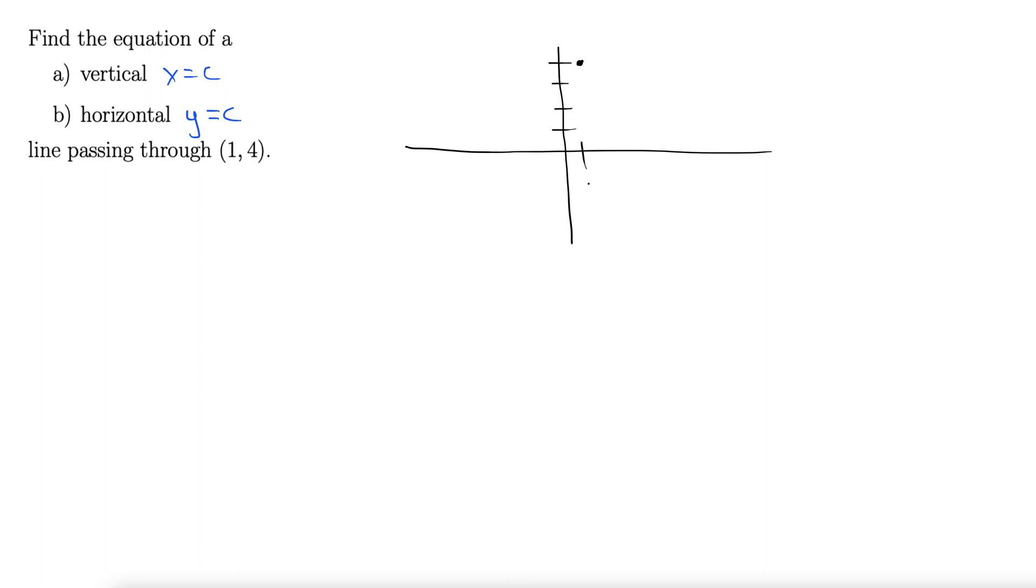Alright, so back to the example here. We have 1 and 4. So here's our point 1, 4. A vertical line going through this is going to go just like this, right? Right through that point.